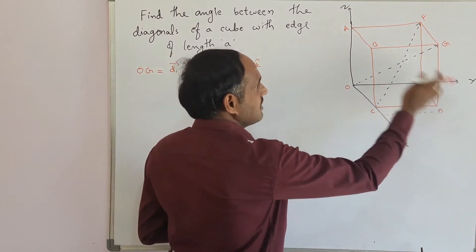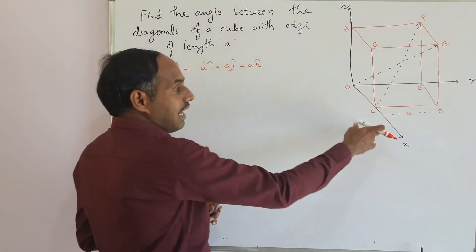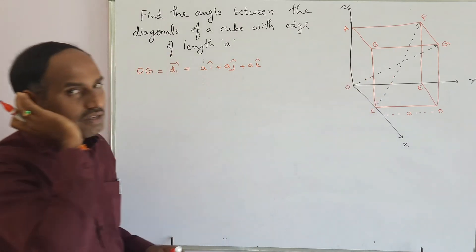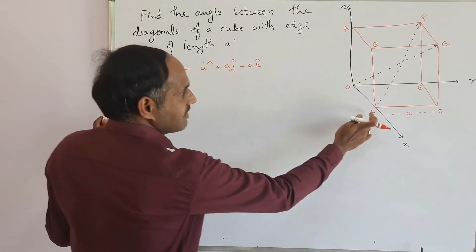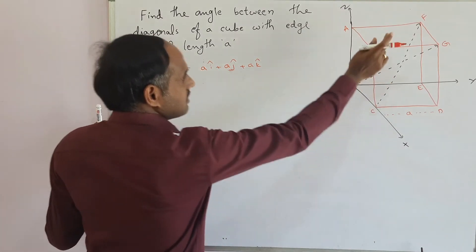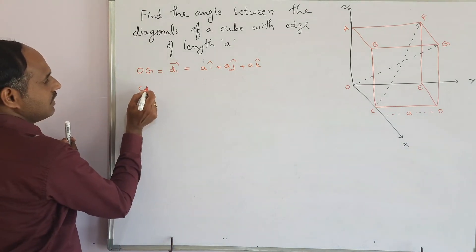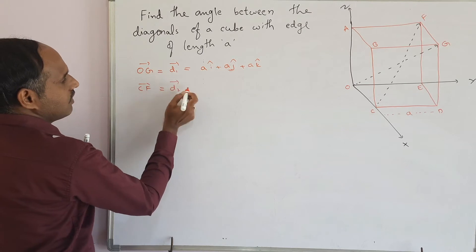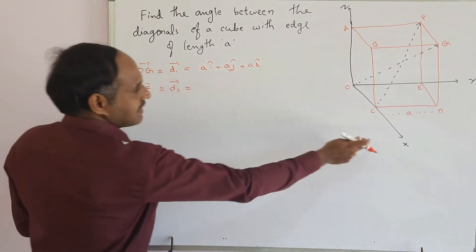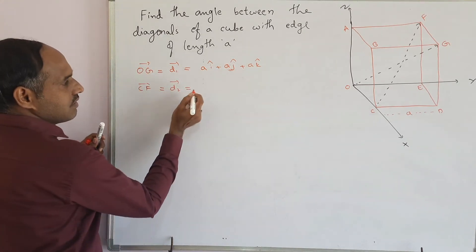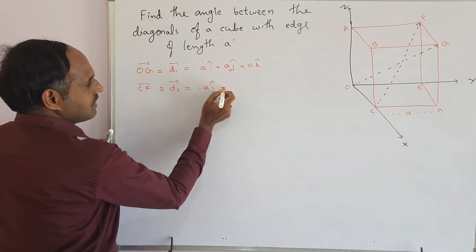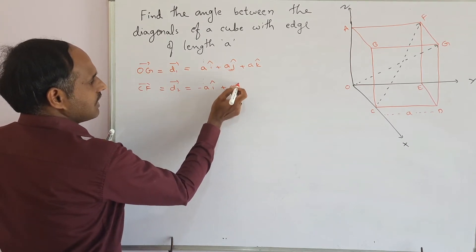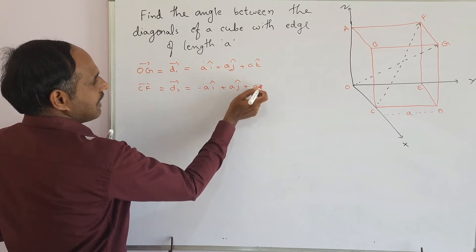Now here, this Y-Z plane is in the plane of the board and X axis is away from the plane of the board. As this diagonal is CF bar, we can write as D2, the second diagonal. In the second diagonal, we can write X axis as into the plane of the board. So, we can write minus A i cap plus A j cap plus A k cap.